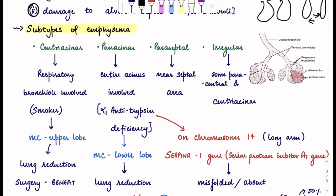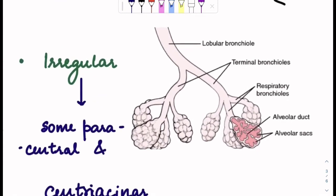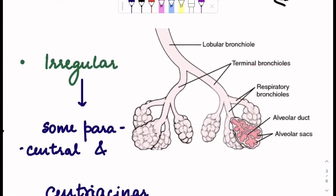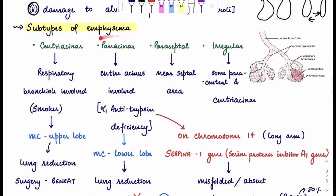Subtypes of emphysema: you have centriacinar, panacinar, paraseptal, and irregular. Centriacinar involves the respiratory bronchioles — it is the most common one in smokers. From the diagram you can see the respiratory bronchiole, alveolar duct, and alveolar sac. Centriacinar affects the respiratory bronchioles and is most commonly seen in smokers. Panacinar involves the entire acinus, and the main reason for panacinar type is that it is seen in alpha-1 antitrypsin deficiency. Paraseptal is near the septal area. In irregular, you can see there will be some component of paraseptal and centriacinar.